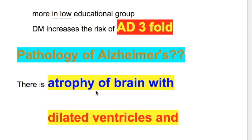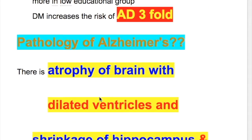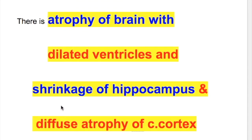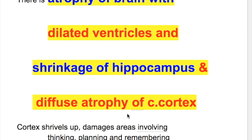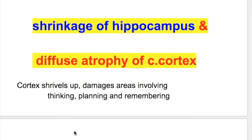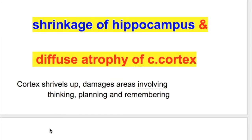Pathology of Alzheimer's disease. There is atrophy of the brain with dilated ventricles and shrinkage of the hippocampus and diffuse atrophy of the cerebral cortex. The cortex is damaged in areas involving thinking, planning, and remembering.